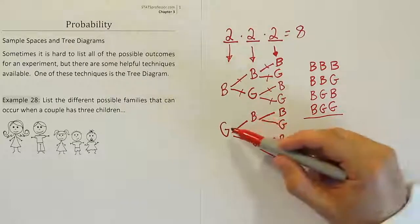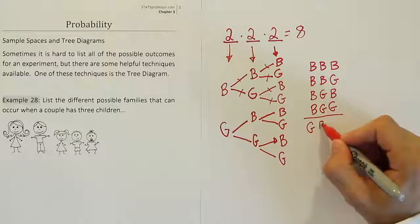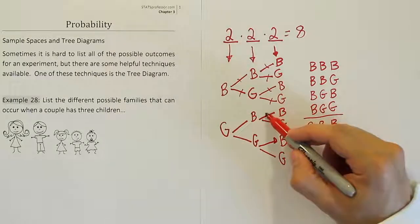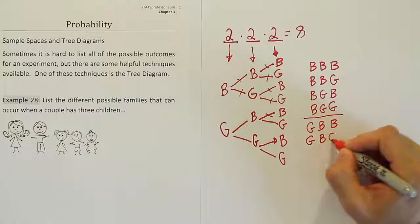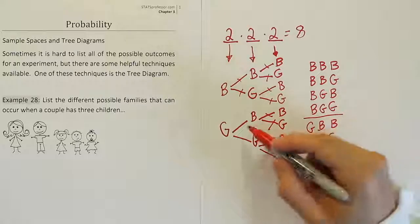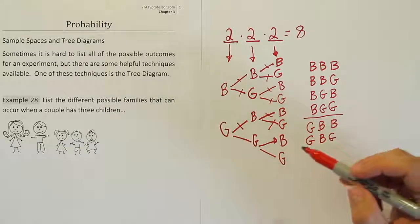Now, what else could happen? It could be girl, boy, boy. Girl, boy, boy. So we've used up that one. Girl, boy, girl. Girl, boy, girl. We used up that one. And then we've used up this whole branch. Now we keep going.